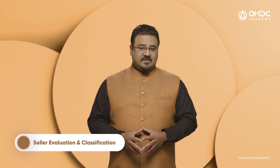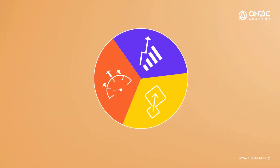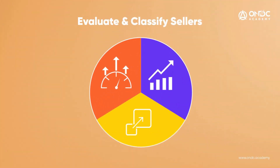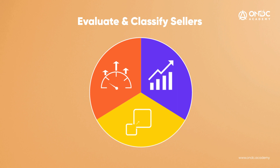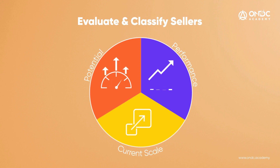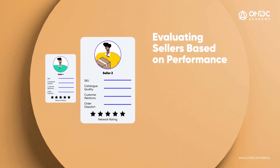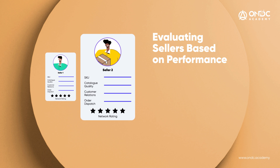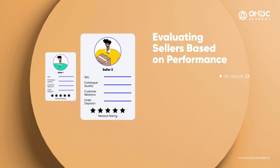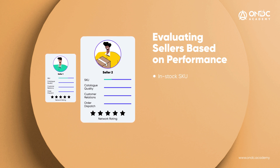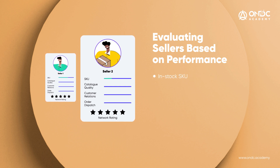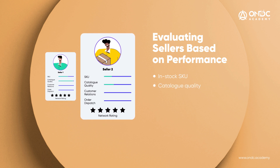The first step in seller management is to evaluate and classify sellers into different buckets. This can be done based on the seller's performance, their current scale, or their potential. When classifying sellers based on performance, we should evaluate their metrics like in-stock, SKU (stock keeping unit), catalog quality, how